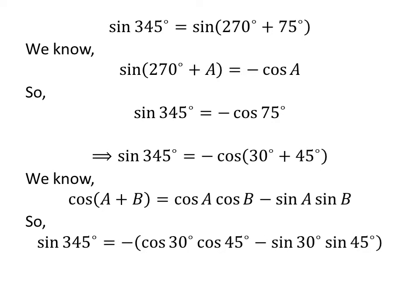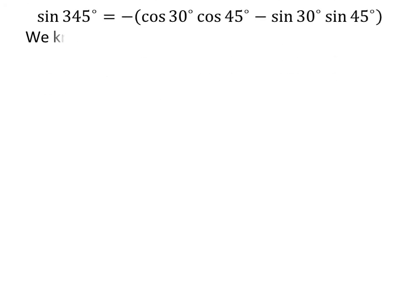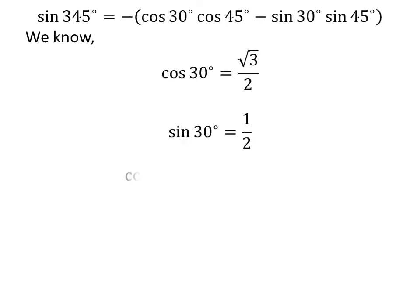Applying the identity gives us: sine of 345 degrees is equal to minus cosine of 30 degrees times cosine of 45 degrees minus sine of 30 degrees times sine of 45 degrees. As we know, cosine of 30 degrees is equal to square root of 3 over 2, sine of 30 degrees is equal to one half, and cosine of 45 degrees equals sine of 45 degrees equals square root of 2 over 2. So we plug these values into the equation.